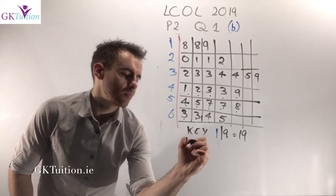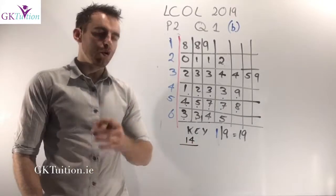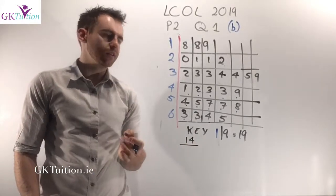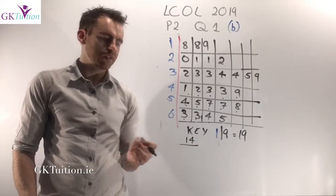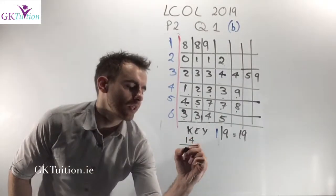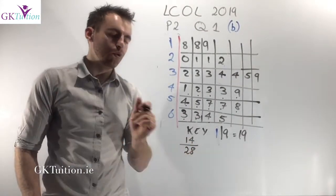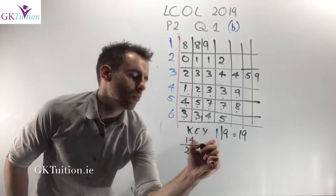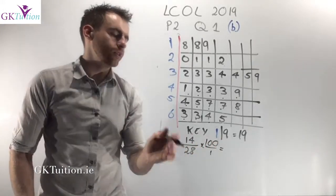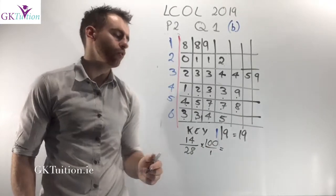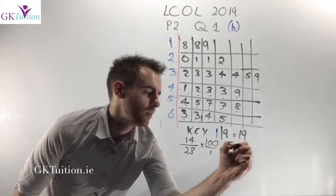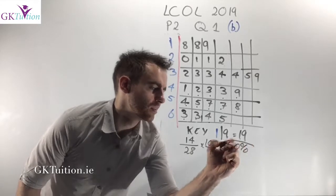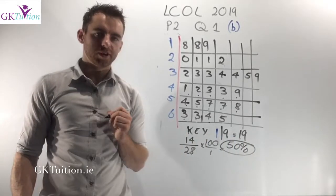So to get that as a percentage it's 14 over the total amount of employees. We know the total amount of employees is 28. So 14 out of 28 of them are over the age of 40 and to turn this into a percentage we need to multiply by 100 over 1. 14 over 28 multiplied by 100 over 1 tells me that 50% of the employees in this company are over the age of 40.